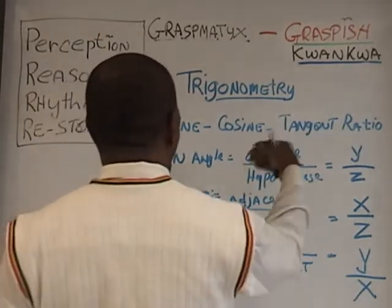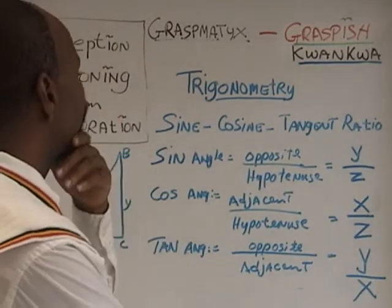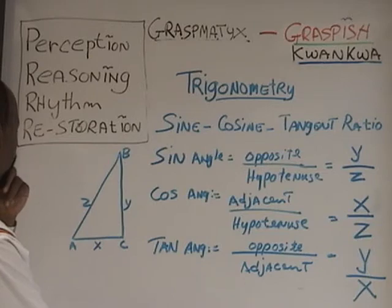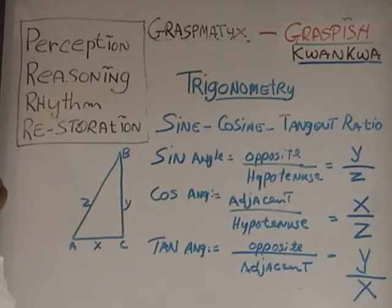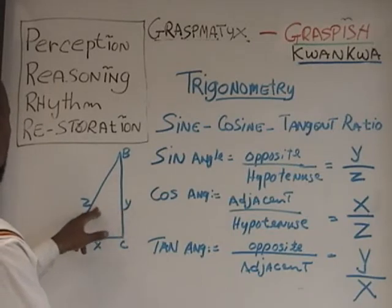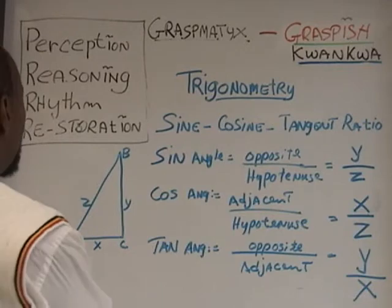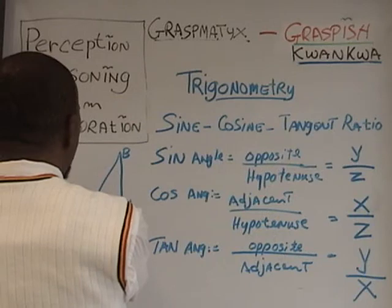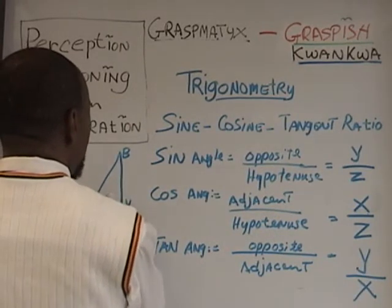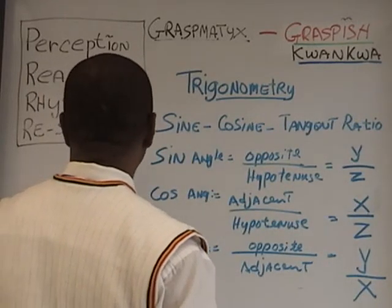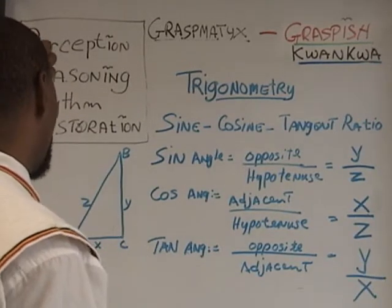A sine angle would be opposite above hypotenuse — the hypotenuse. We learn about what is opposite and what is hypotenuse. Here is an illustration of a triangle with three sides. We have to identify what is the hypotenuse and what is the opposite side. We have vertices A, C, B, and lines X, Y, and Z identifying the sides. When finding the equation for the sine angle, it would be the opposite, which is Y, above the hypotenuse, which is Z. So it would be Y over Z.